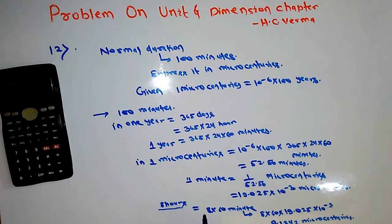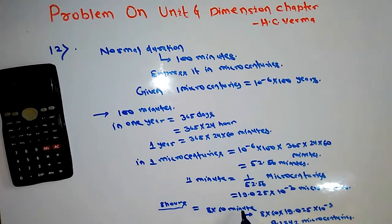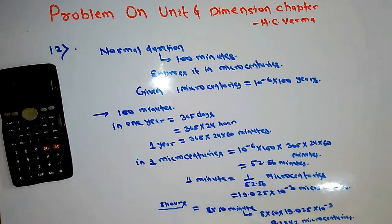For the 8 hours sleep example, converting hours into minutes and then into micro centuries, I got 9.1342 micro centuries. This was question number 12.